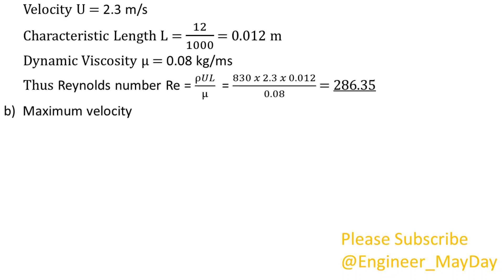Maximum velocity. Mean velocity U bar is equal to half maximum velocity U max. Thus U max is 2 times U bar which gives us 4.6 meters per second.